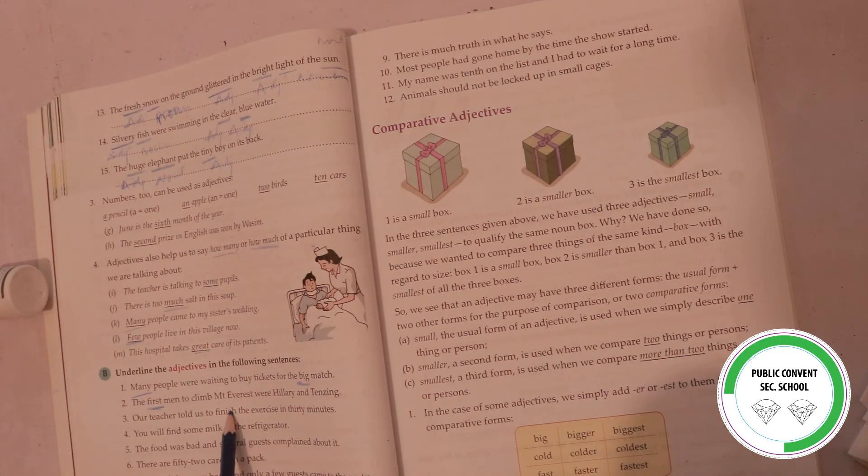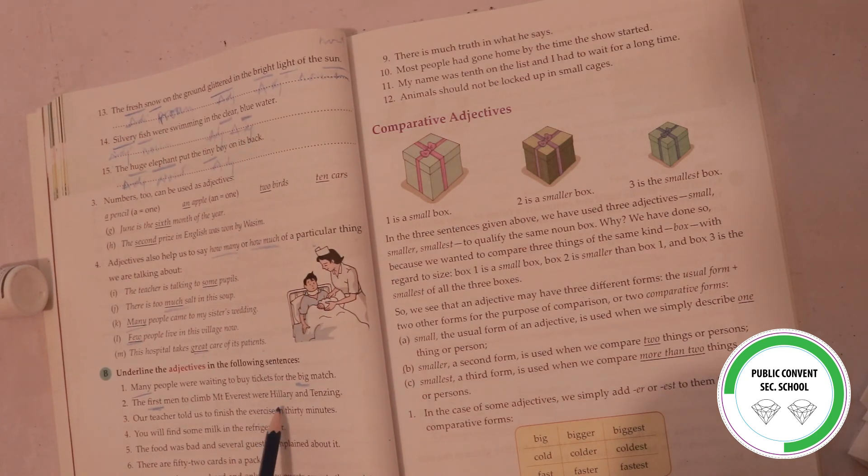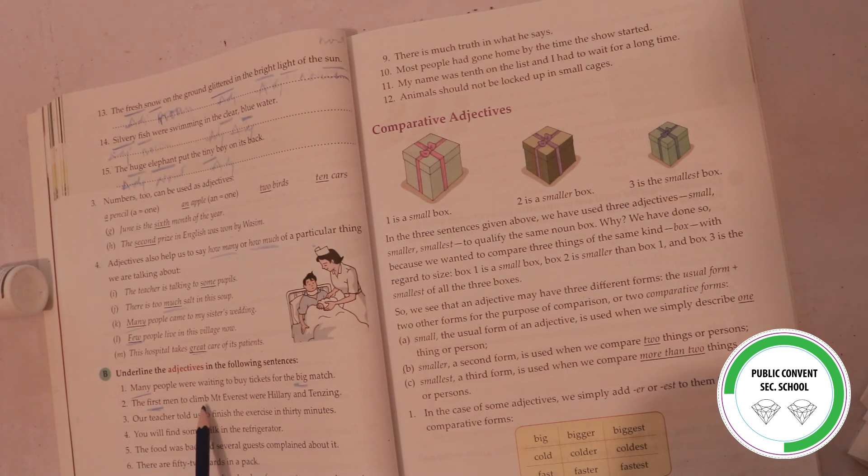Mount Everest, and then there's K2. K2 is in Pakistan. Mount Everest - Hillary and Tenzing, these two people first climbed Mount Everest.